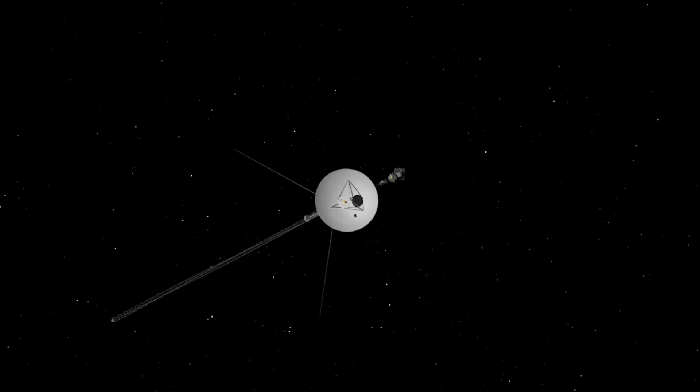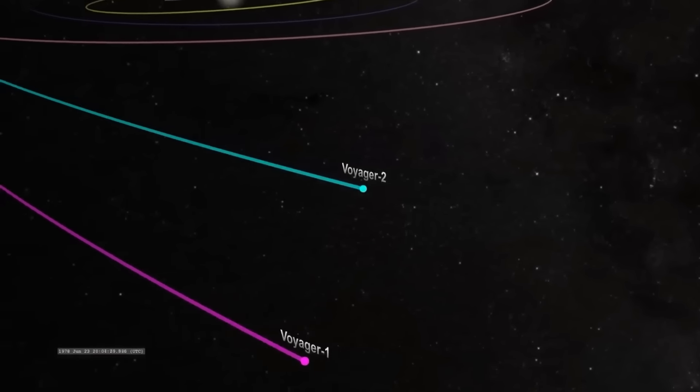How is our dependable space shuttle Voyager 1, located approximately 14.5 billion miles from Earth, faring after decades in space? It's amazing that Voyager 1 is still functional. Nonetheless, a spaceship eventually experiences damage from spending 45 years in the vastness of space.